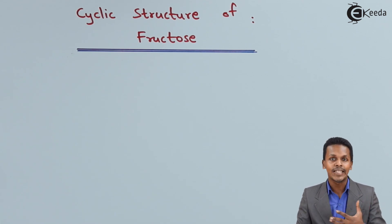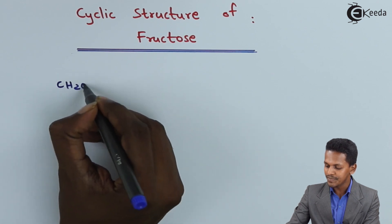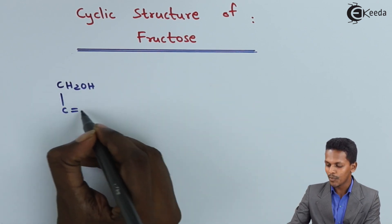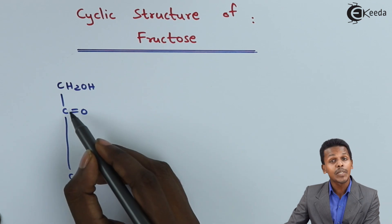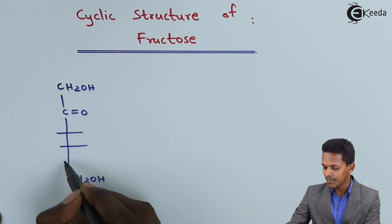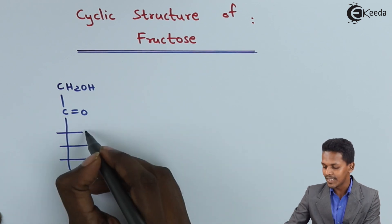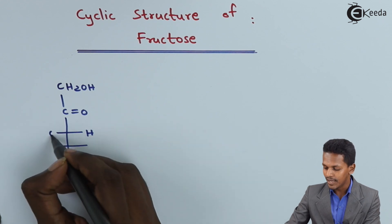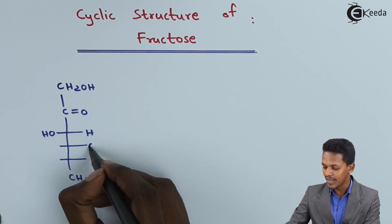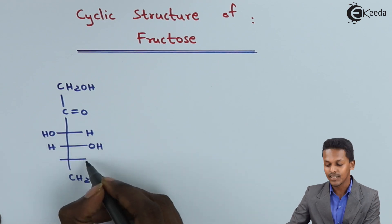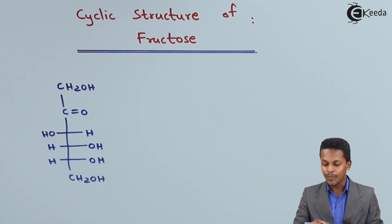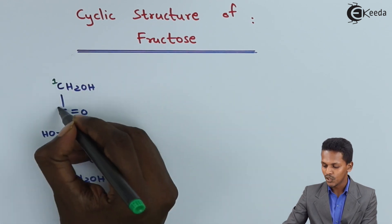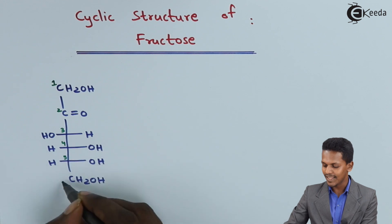For that we need the reference of the open chain structure of fructose. We can write that carbon number 1 is CH2OH, carbon number 2 has a C=O (carbonyl group), and the last carbon atom (carbon 6) consists of CH2OH. Within carbon number 2 and carbon number 6, there are 3 more carbon atoms: on carbon 3, H is on the right and OH is on the left; on carbon 4, OH is on the right and H is on the left; and on carbon 5, OH is on the right and H is on the left.